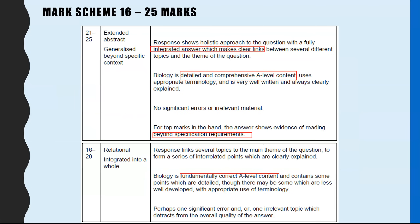The top two boxes are the hardest to get into. Sixteen to twenty is described as relational: the response links several topics to the main theme of the question to form a series of interrelated points which are clearly explained. AQA published some guidelines in 2019 to fully explain that.